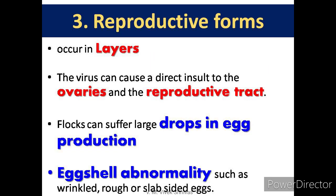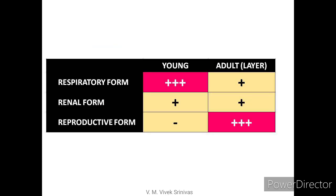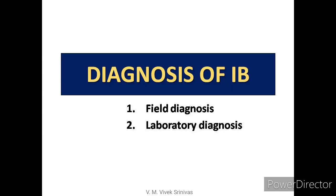In the reproductive form, which occurs in layers, the virus targets the ovaries and reproductive tract. Affected flocks suffer a large drop in egg production and eggshell abnormality. The picture depicts eggshell abnormalities such as wrinkled and thin-shelled eggs. The table shows that the respiratory form is highly pronounced in young birds and the reproductive form in adult layers.